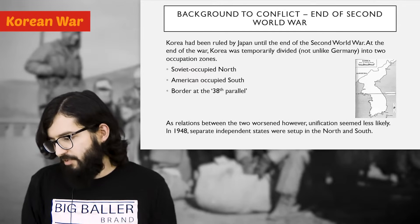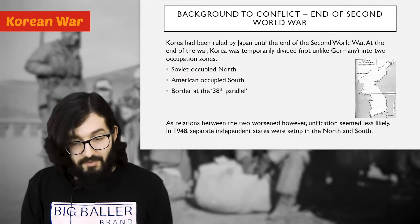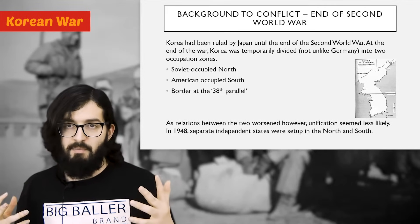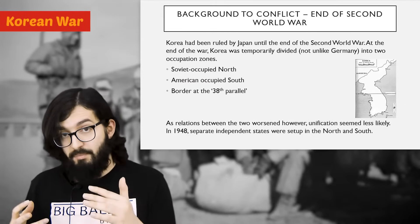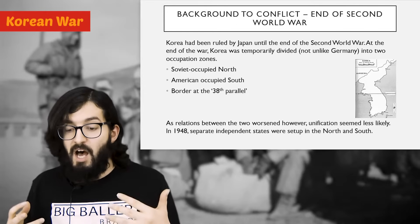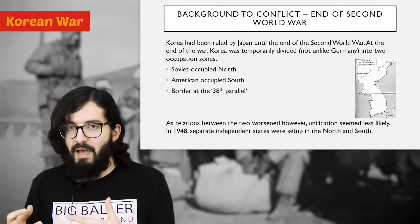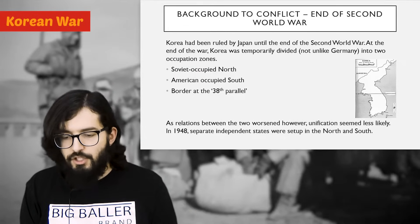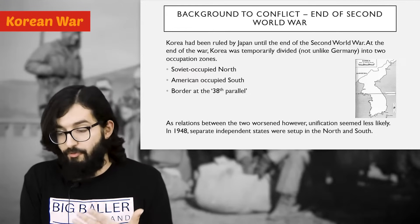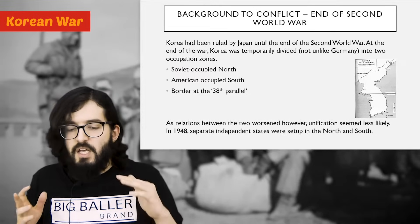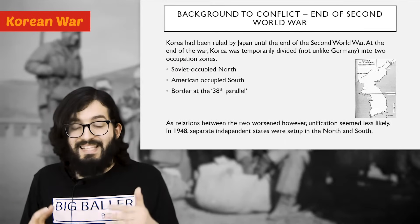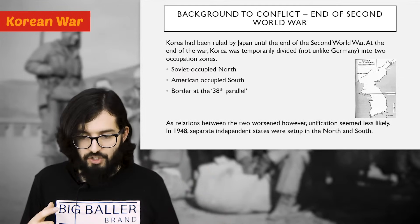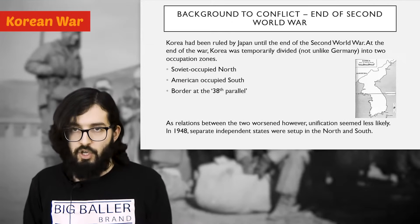The background of the conflict in Korea basically stems from the end of the Second World War. Japan had invaded and conquered most of its neighbors, and Korea had been conquered and officially annexed by Japan in the early 20th century. At the end of the Second World War, Japan was defeated and its conquered territories were surrendered. Korea, not unlike Germany, was temporarily divided into two occupation zones: the North became a Soviet-controlled zone and the South an American-controlled zone, with the border being an arbitrary line called the 38th Parallel.